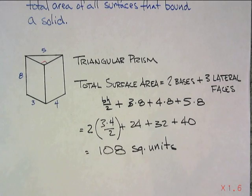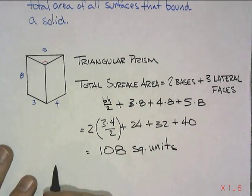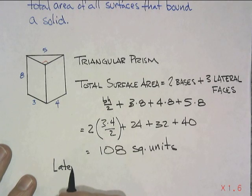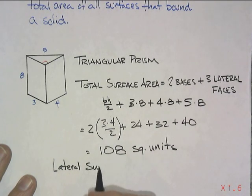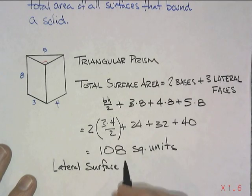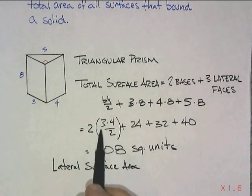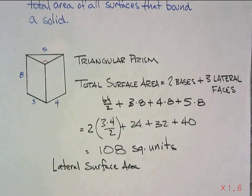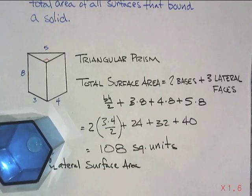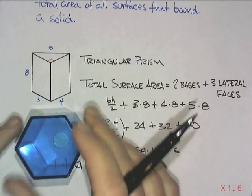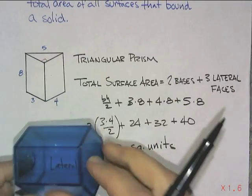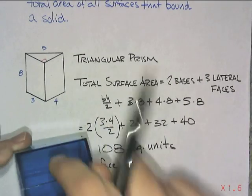If there's a time when we talk about lateral surface area, the lateral surface area would be everything but the bases. So you do not include the two triangles. Or if you had a hexagonal prism such as this, you would not count the two hexagons, you would only count the rectangles.